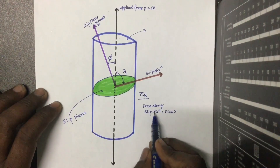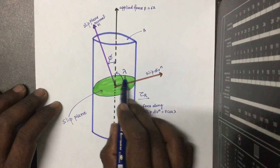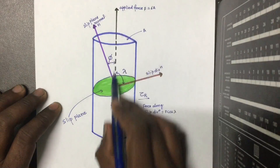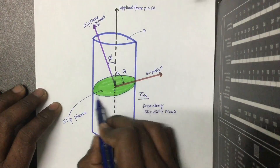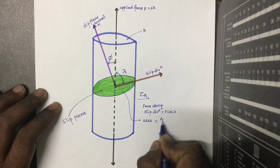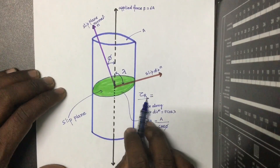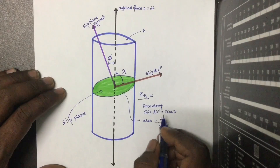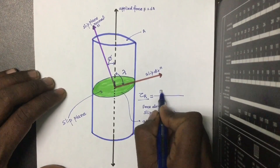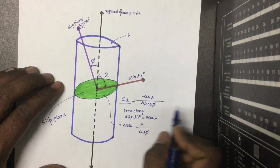We have calculated the force acting along the slip direction. To calculate the stress, we need the area of the slip plane. The slip plane makes an angle phi (φ) with the cross-section, so the area of the slip plane equals A divided by cos(φ). Now we can calculate the resolved shear stress: it equals F·cos(λ) divided by A/cos(φ).